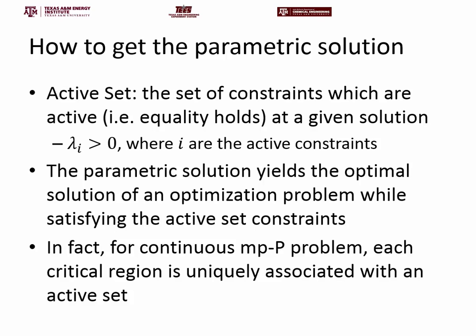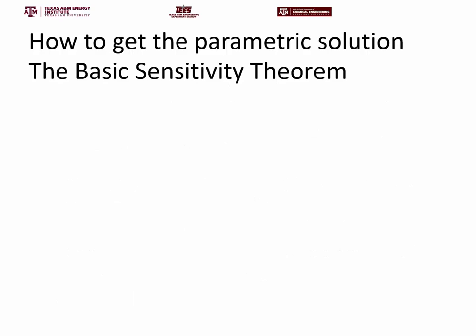For all continuous multi-parametric programming problems, each critical region is uniquely associated with an active set. Every critical region has an active set. However, some earlier algorithms — such as the 2002 paper I've linked below — create so-called artificial cuts due to the algorithm, so not every active set uniquely corresponds to a critical region. But for now, think of it this way: every critical region is uniquely associated with an active set.